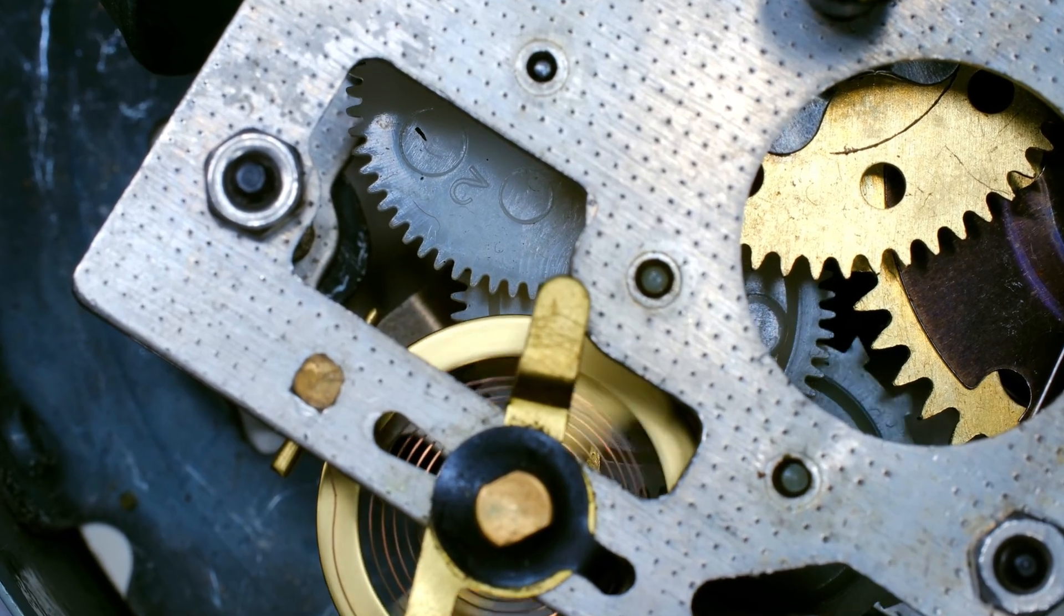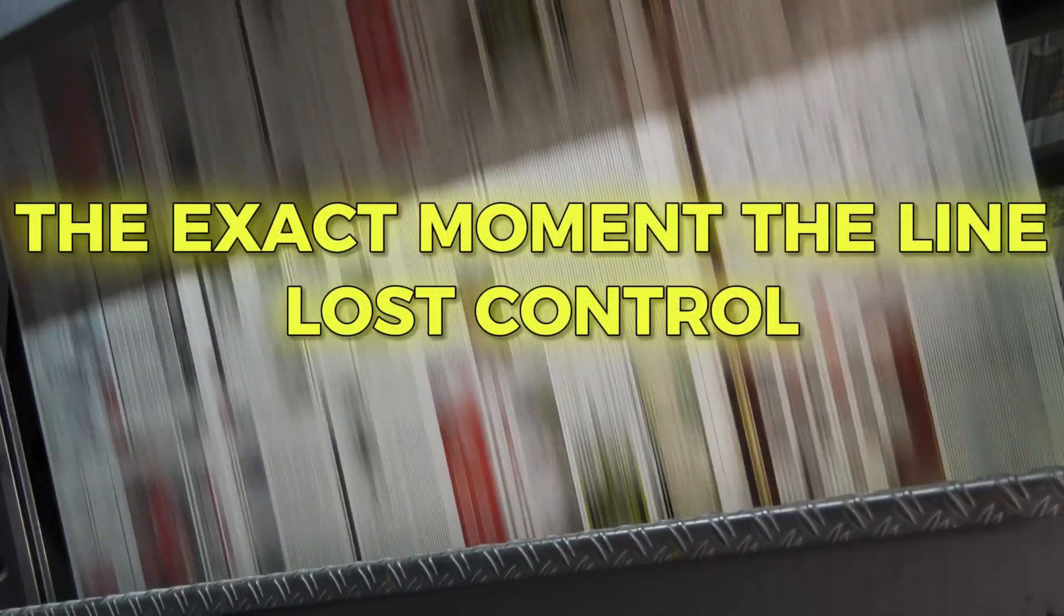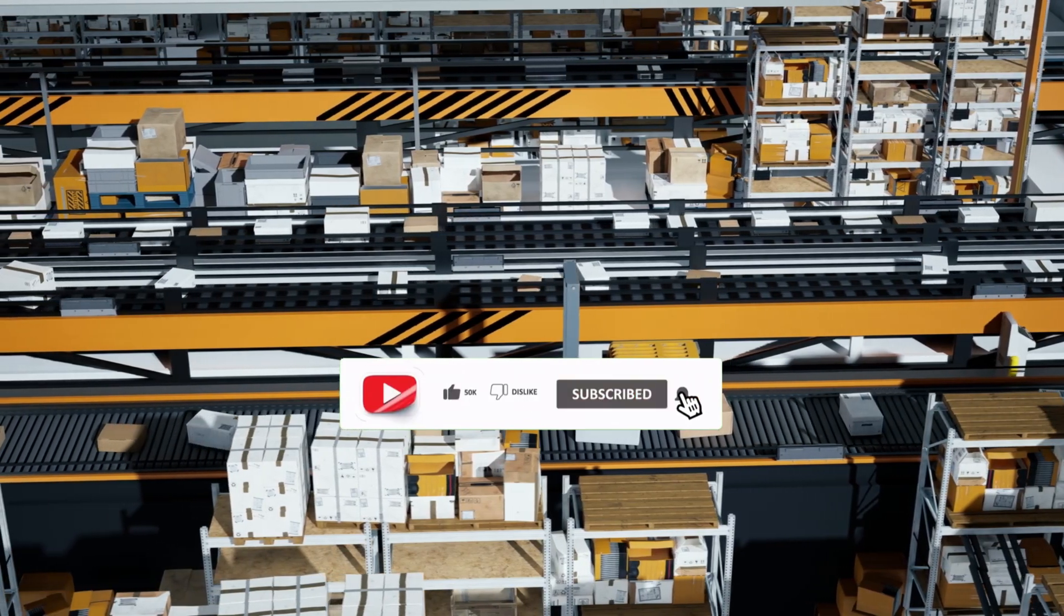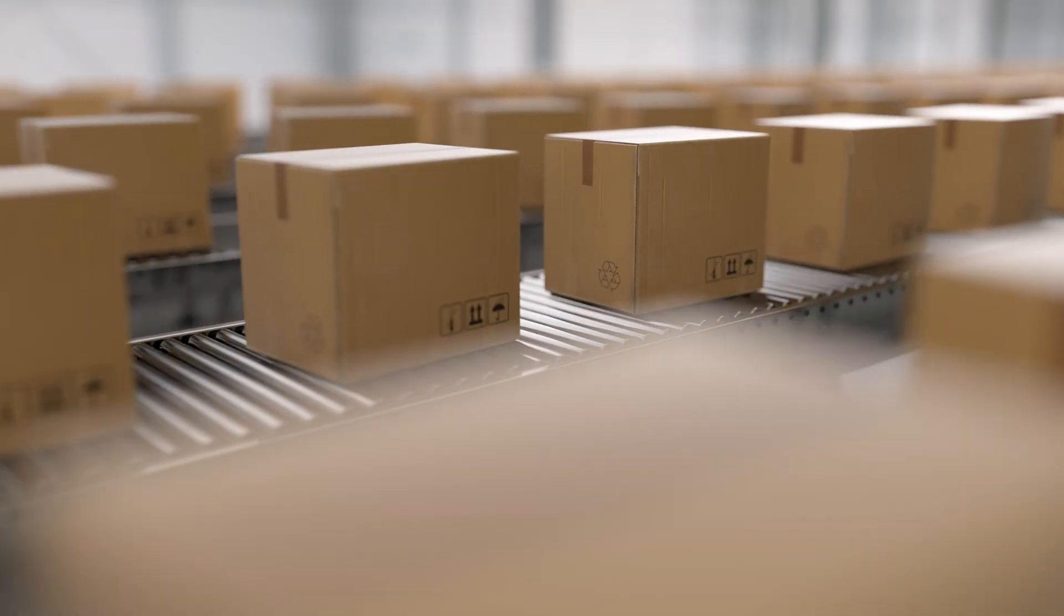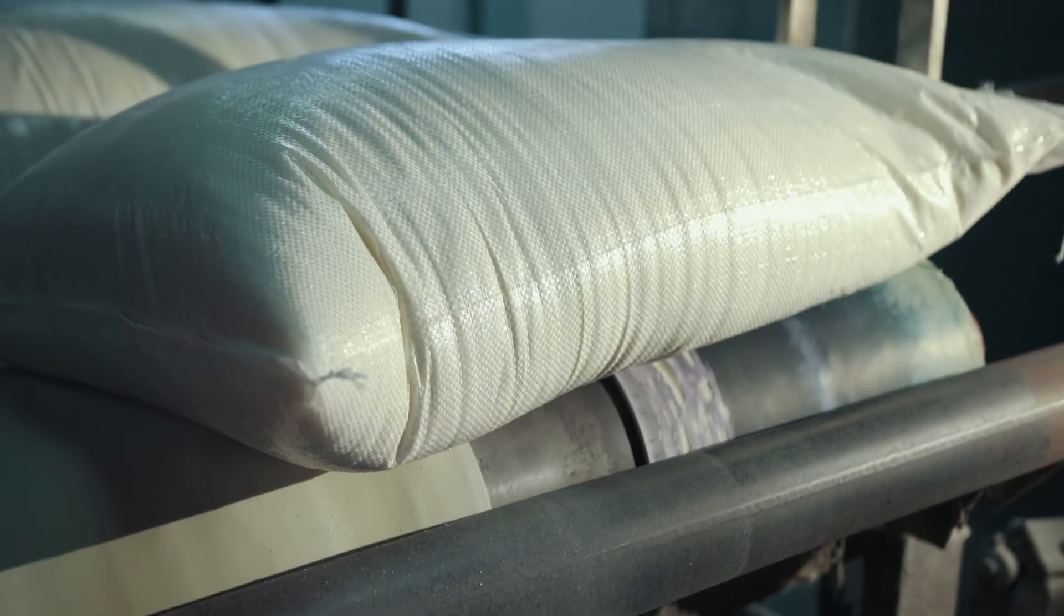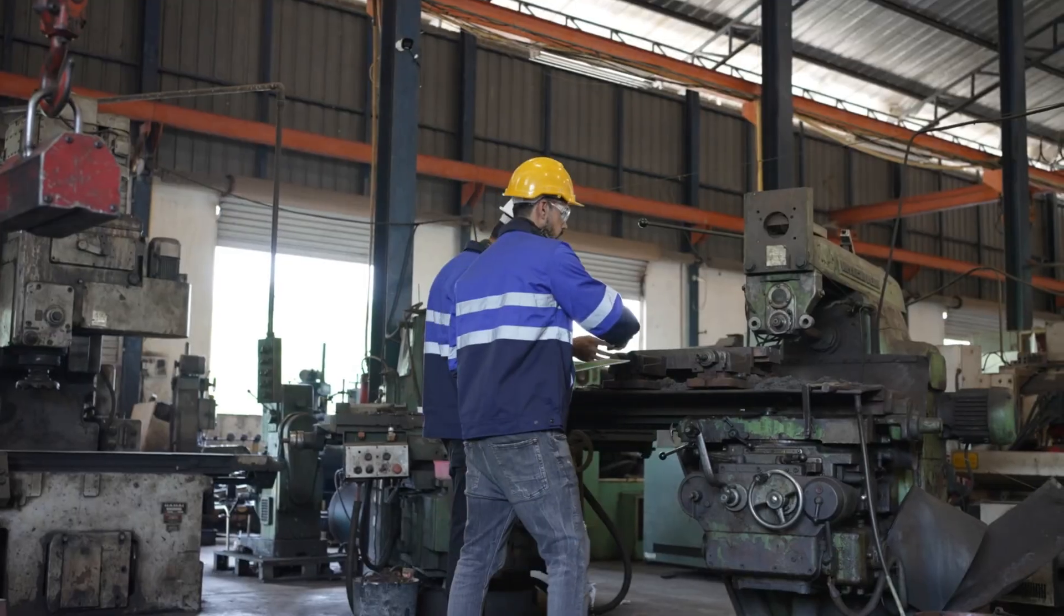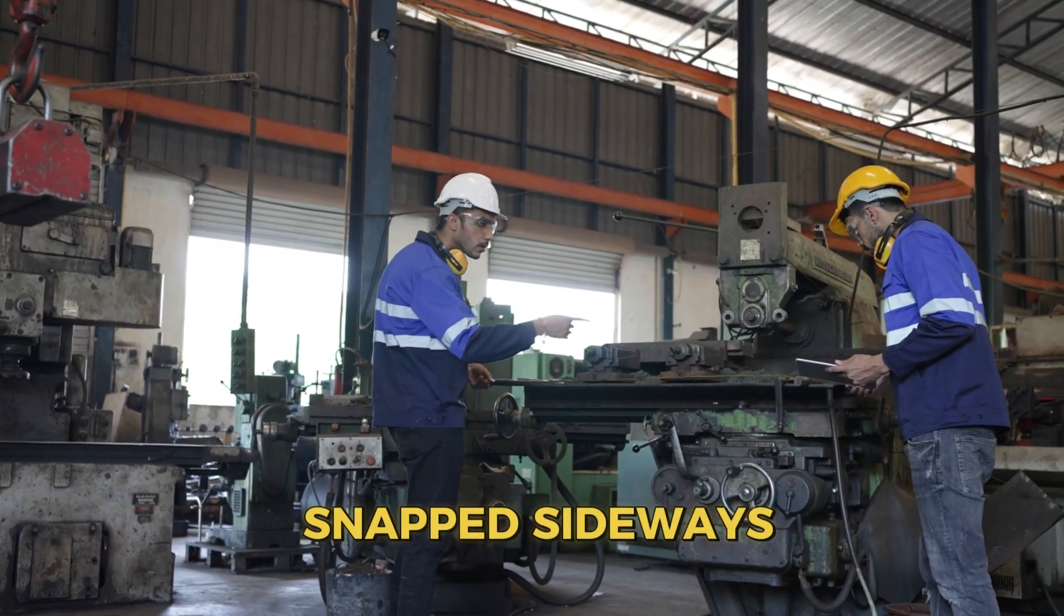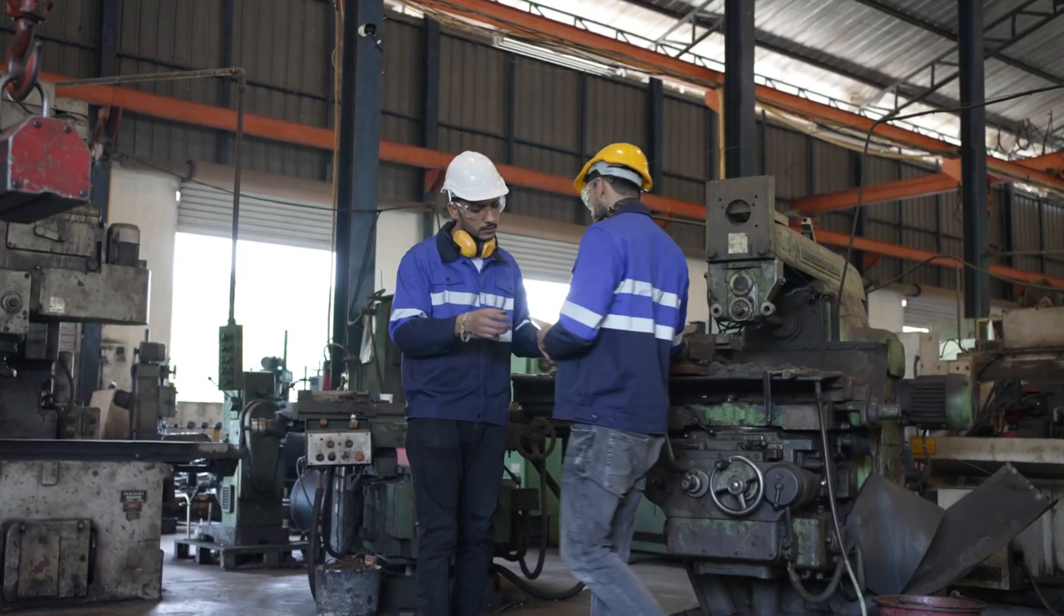Once timing collapses, everything collapses. The exact moment the line lost control. The speed never changed. The conveyors kept moving. But the line had entered a state engineers fear most. Chaos at full velocity. Packs piled up. Rollers strained under excess load. Jams formed faster than operators could clear them. And then, as pressure built across multiple sections, a belt finally snapped sideways off its tracking, and the entire line screeched to a violent stop.